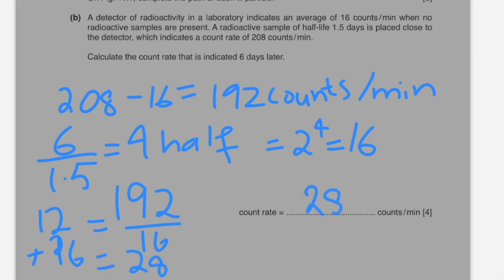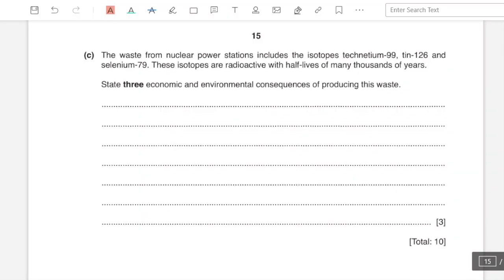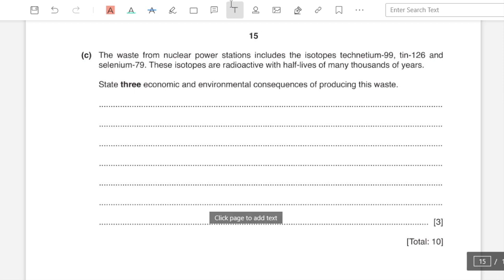Part c: the waste from nuclear power stations includes the isotopes technetium 99, tin 126, and selenium 79. These isotopes are radioactive with half-lives of many thousands of years. State three economic or environmental consequences of producing this waste. We'll have to store it with precaution.